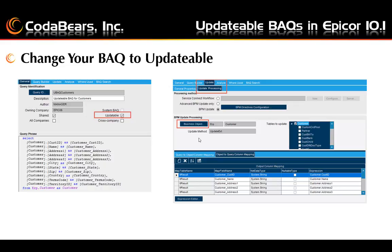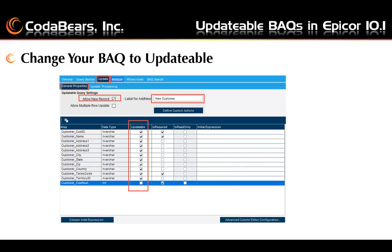Next, go to the update tab and the update processing sub tab and select a business object and method to use for updating the data in your query. The information in the bottom grid will fill in automatically as long as you have at least chosen the Epicor required fields. You'll also need to go to the update tab and the general properties tab and select what type of updates you want. In this case we want to add new records, and all fields will be updatable except for the customer number — since it is a key field, it gives errors when you try to update it. You can also choose to allow multiple row updates.